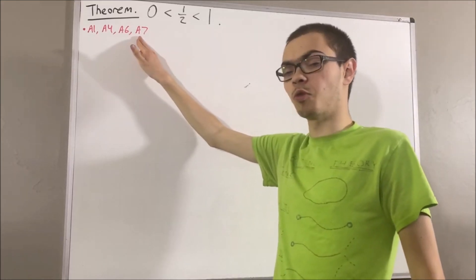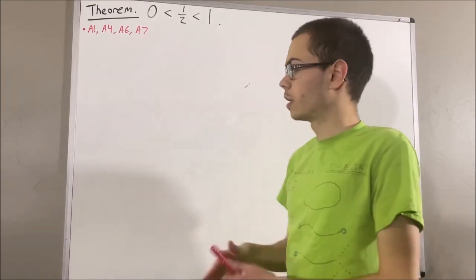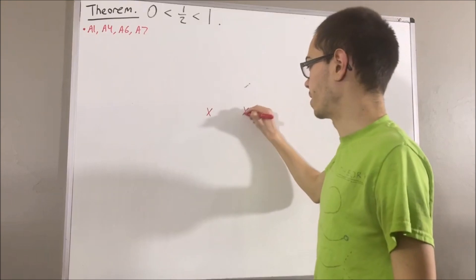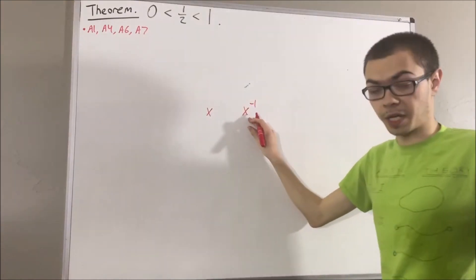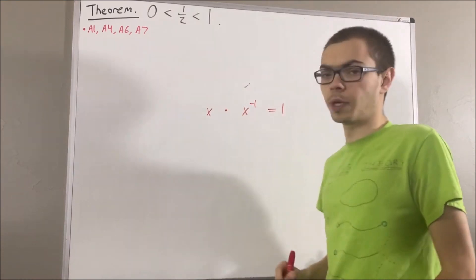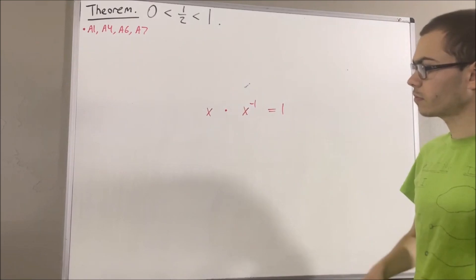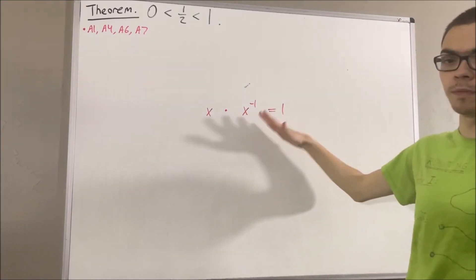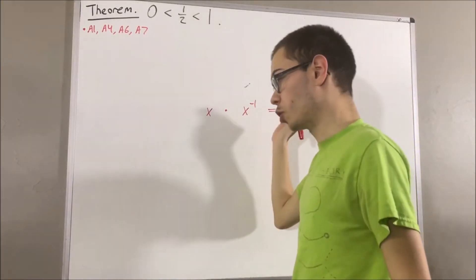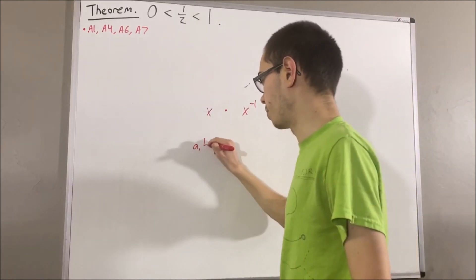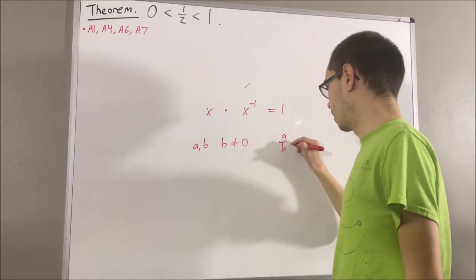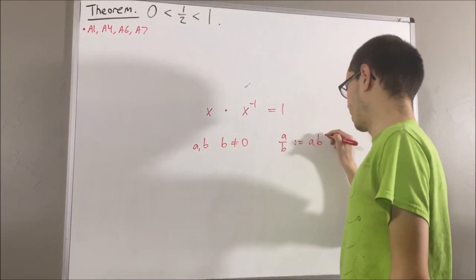Axiom 7 tells us that every non-zero real number has a reciprocal. For every non-zero real number x, there exists a real number which we call the reciprocal of x, and it has the property that x times the reciprocal of x is equal to 1. Using the concept of the reciprocal, we define the operation of division: given any two real numbers a and b where b is not equal to 0, we define a over b to be a times the reciprocal of b.